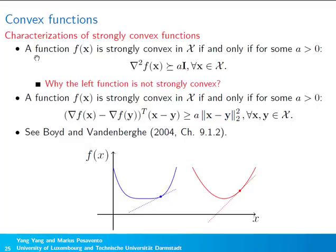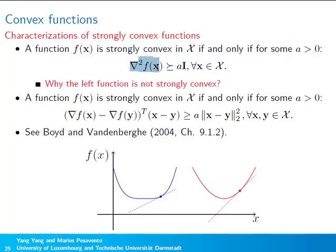There are several characterizations of strongly convex functions. For example, f(x) is strongly convex in the feasible set if and only if there exists a > 0 such that the Hessian is always at least aI, in the sense that the Hessian minus aI is positive semidefinite. From this, a function with a flat region is not strongly convex because the Hessian at that flat region equals zero, which is no longer positive definite.